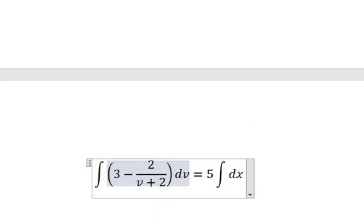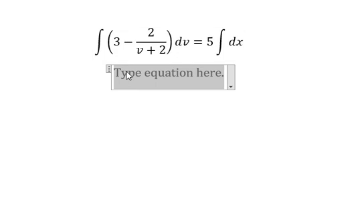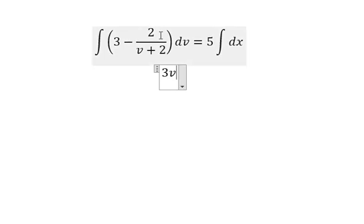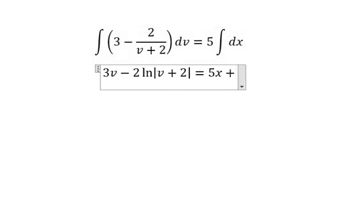And now, we have the final answer. The integration of number 3, we have 3v. The integration of this one, we have negative number 2 ln of the absolute value of v plus 2. The integration of 5 with the integral of dx, you got about 5x. And we have c.